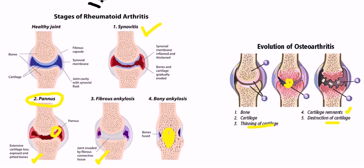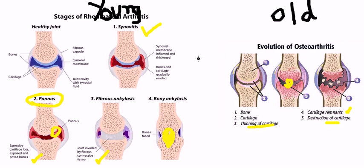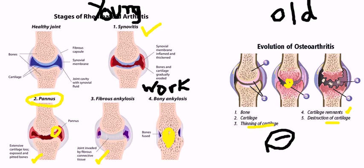To summarize the comparison: rheumatoid arthritis affects young patients; osteoarthritis affects elderly patients. Morning stiffness in rheumatoid arthritis improves with work. In osteoarthritis there is more pain with use. Osteoarthritis is a non-inflammatory condition, while rheumatoid arthritis is an inflammatory condition.